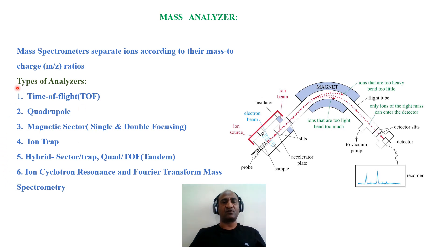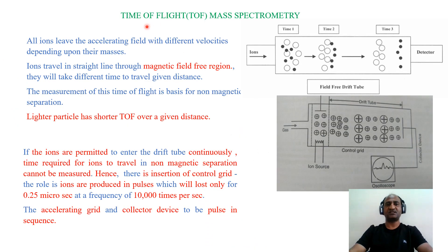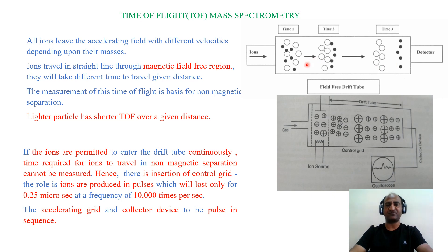I am going to explain the first three types of mass analyzers. The first is time of flight, abbreviated as TOF. When the instrument consists of a time of flight analyzer, that system is known as time of flight mass spectrometry. In this type of instrument, there is a long tube which operates in a magnetic field free region — there is no magnetic field employed. It is a simple tube where ions are allowed to pass, and different ions have different velocities based on their mass-to-charge ratio.